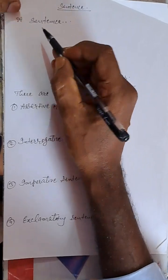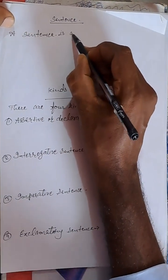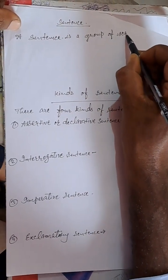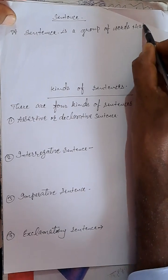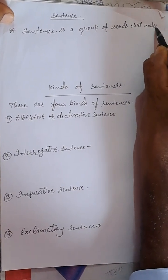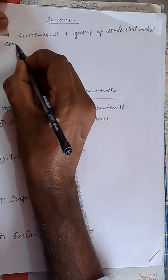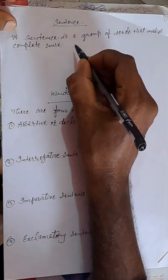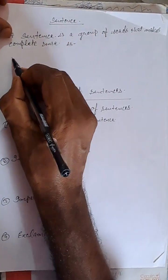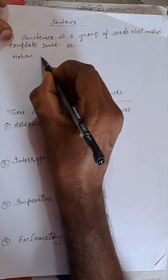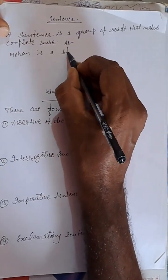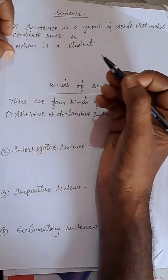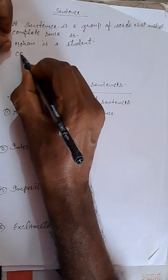What is a sentence? A sentence is a group of words that makes complete sense. For example: 'Mohan is a student' and 'Come here.'